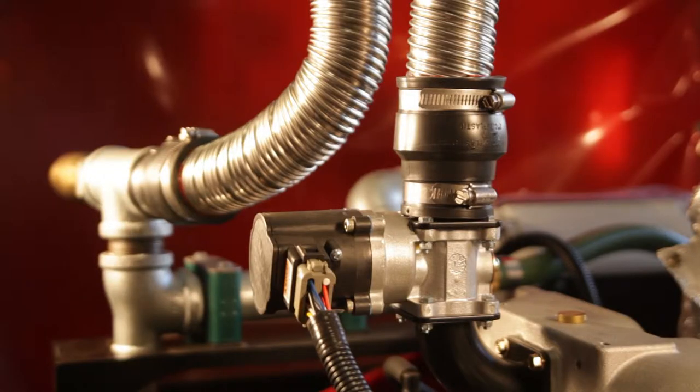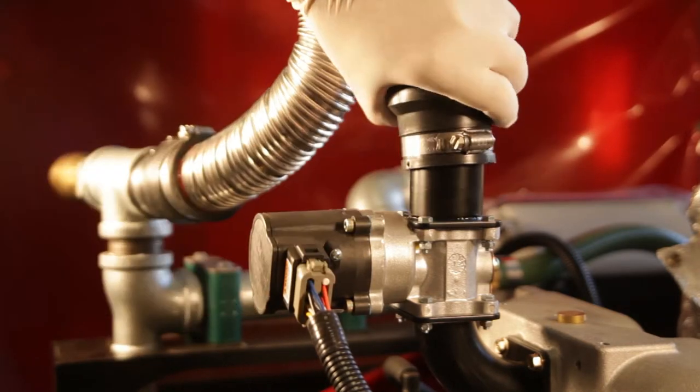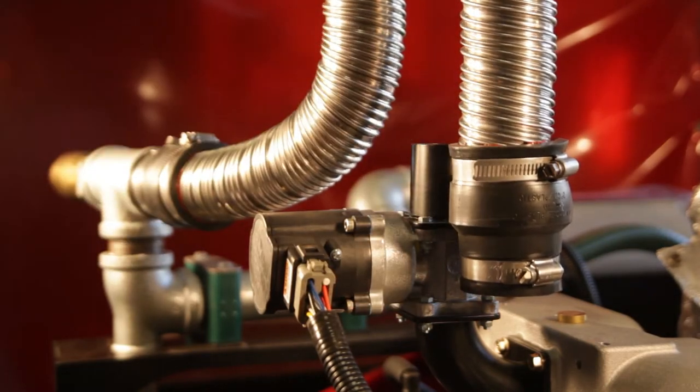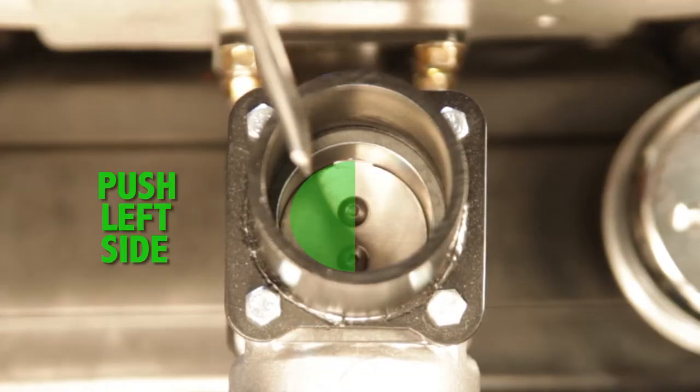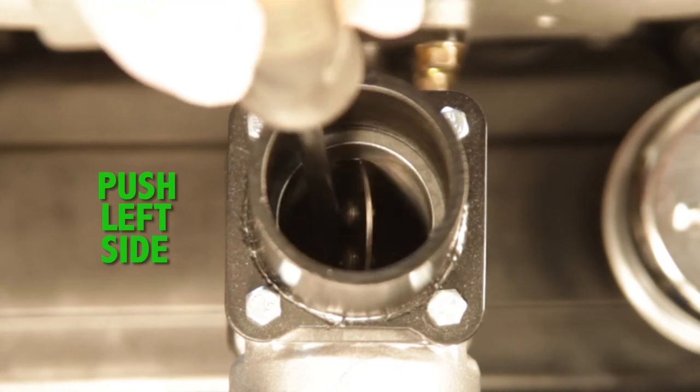Use your flat blade screwdriver or 8mm nut driver to loosen the hose clamp and pull off the rubber coupler from the throttle body. Now, push down on the valve with your screwdriver to make sure it moves smoothly from fully open to fully closed.